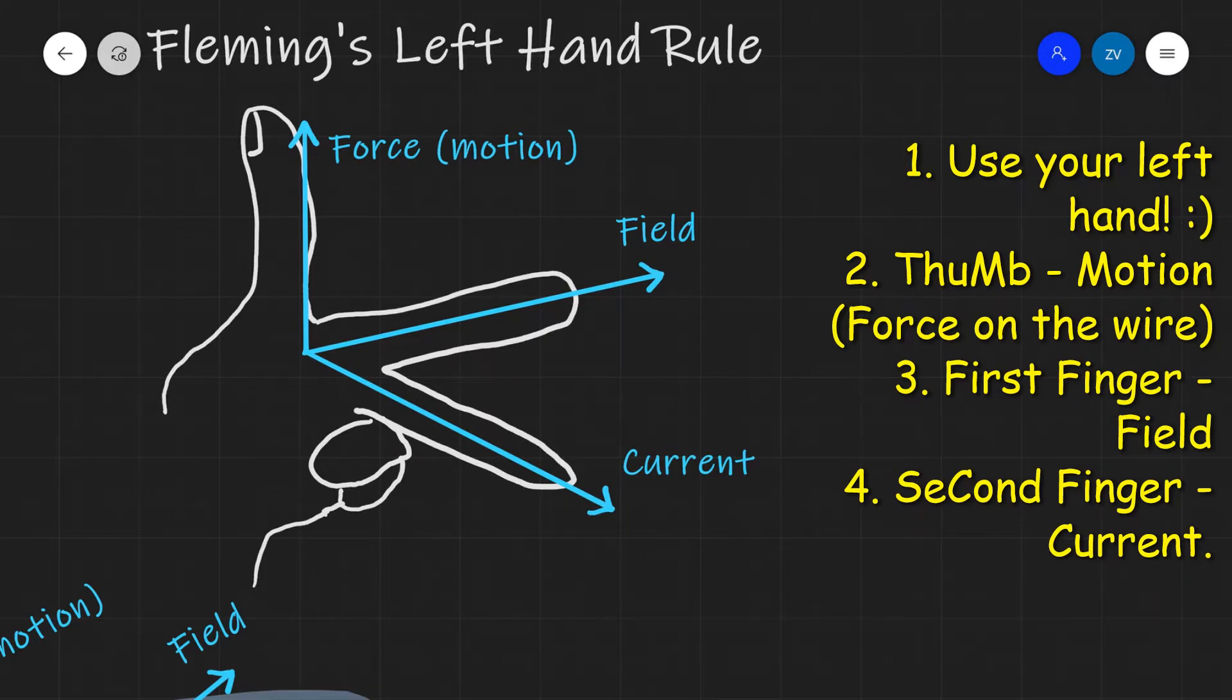So we take our left hand, and if we orientate our fingers as shown in this diagram, the thumb will give us the direction of the motion—in other words, the direction of the force that the wire is going to experience. Our first finger will give us the field, and our second finger will give us the direction of the current.